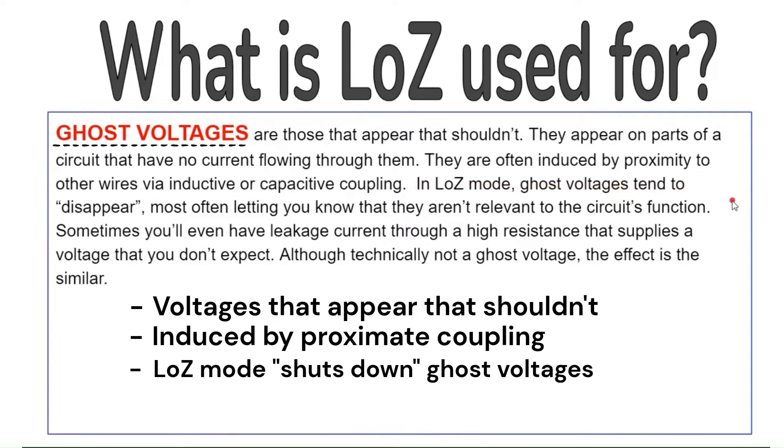In low Z mode, ghost voltages tend to disappear, most often letting you know that they aren't relevant to a circuit's function.